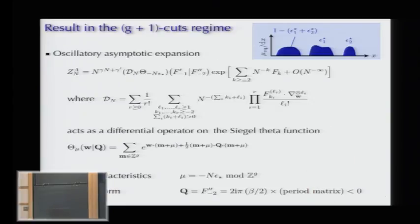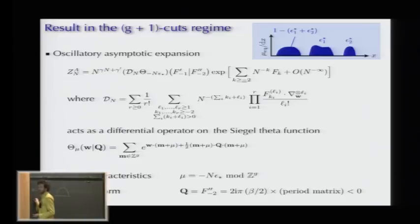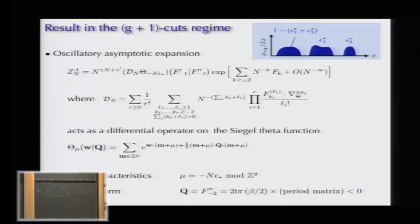Regarding the matrix q: it is the Hessian of an energy functional, which I will specify later with respect to the filling fraction variables. And the coefficient w is the first correction to the free energy at epsilon star. I claim these coefficients are computable but will not state the formulas now.